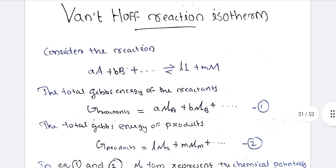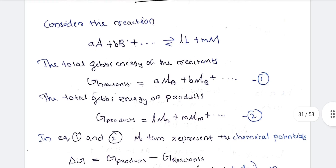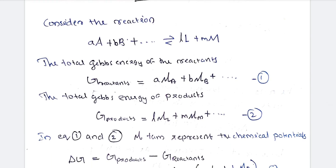Now consider a reaction: aA + bB + ... gives lL + mM + ... The total Gibbs energy of reactants is A·μA + B·μB + etc. In terms of chemical potential, the Gibbs energy of products is delta G(products) = L·μL + M·μM + etc.